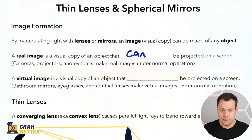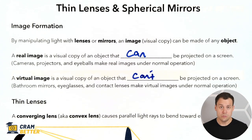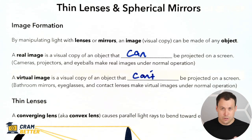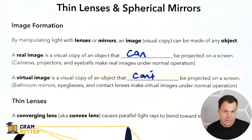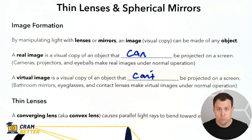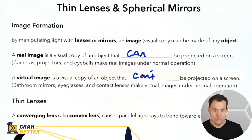A virtual image is something that can't be projected onto a screen. For example, your bathroom mirror — if you look in it, you'll see an image of yourself. Your eye can see it, but it can't be projected onto a screen. If you took a piece of paper and put it behind your bathroom mirror, nothing would show up on that paper. There's no way to actually project that image. That's what a virtual image is.